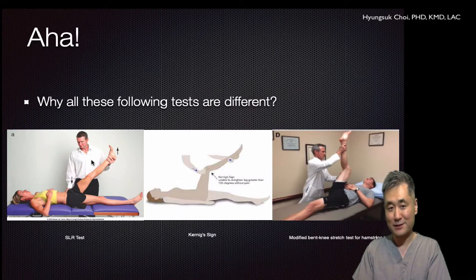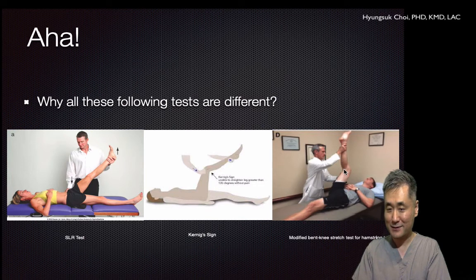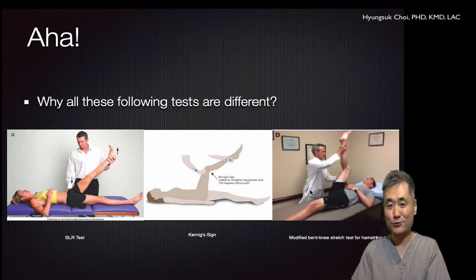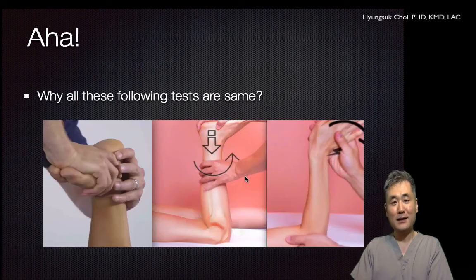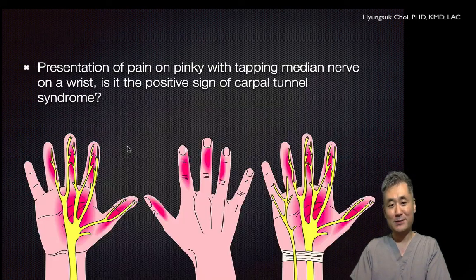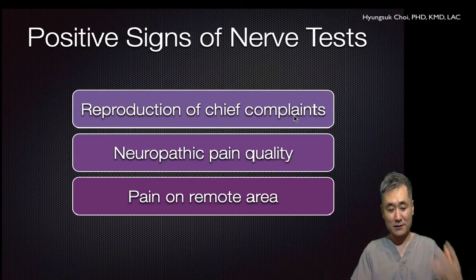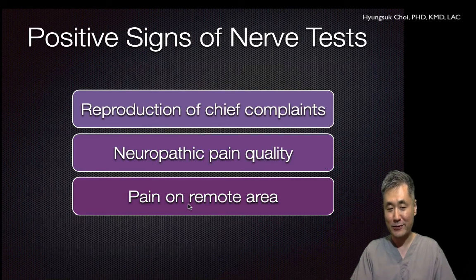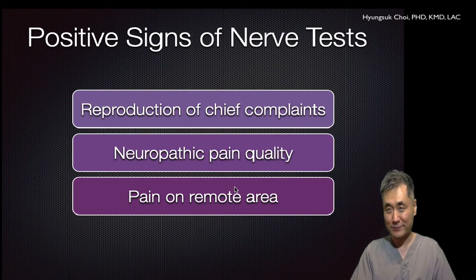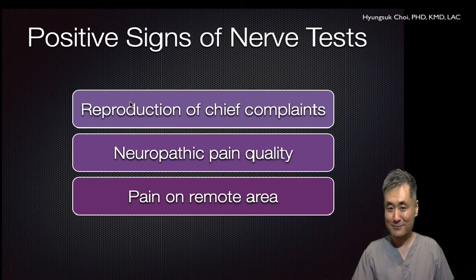The nature of pain is different — you need to be able to tell the difference. Tingling, shooting, electricity-like pain is neuropathic; throbbing, dull pain is nociceptive. The positive sign of nerve tests: reproduction of the chief complaint like tingling, shooting, electrical, neuropathic pain quality — and pain in a remote area, like tingling on the pinky side of the toe or tingling in the calf. Those are signs of positive nerve tests.